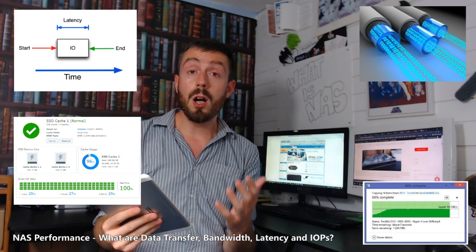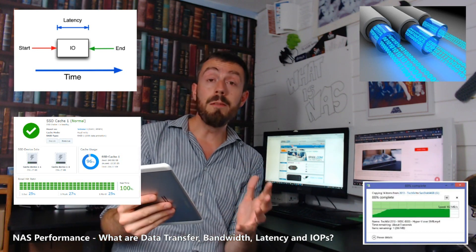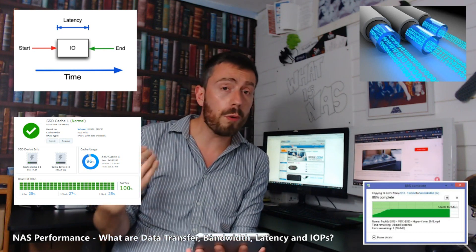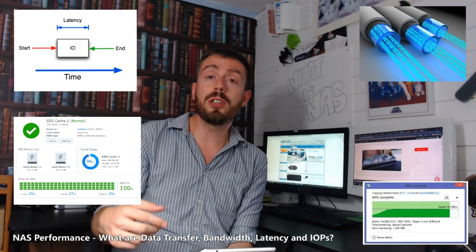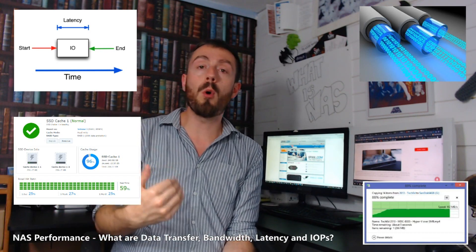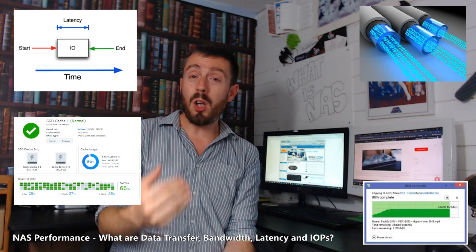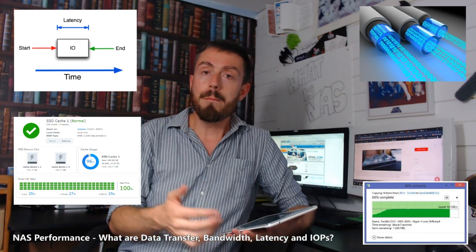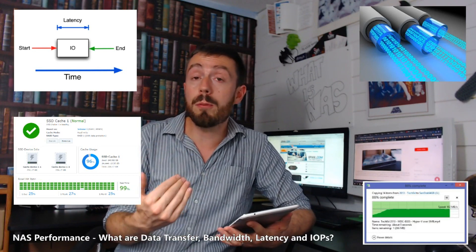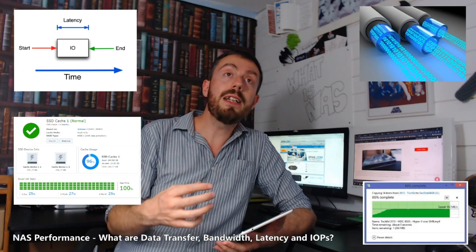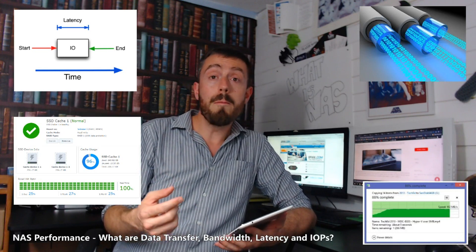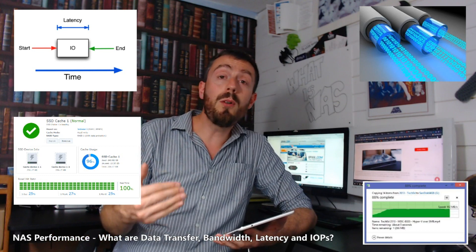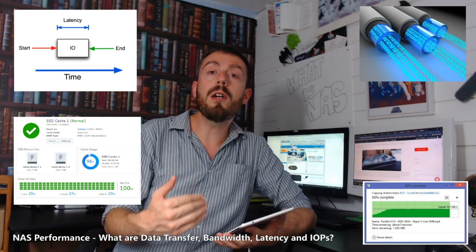Which brings us to our last one: IOPS, or input/output per second. This is effectively all of your reads and writes and all of your instructions — how many can be performed per second. There was a time when IOPS wasn't really counted too much, as older media had very low IOPS and therefore it wasn't really seen as the benchmark you were looking for. Around 12 to 15 years ago, IOPS were so low that they weren't really a unit of measurement.